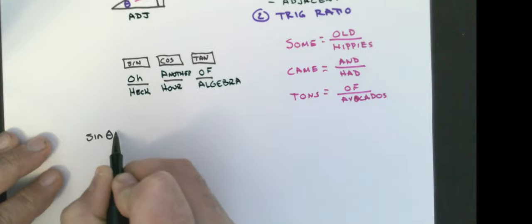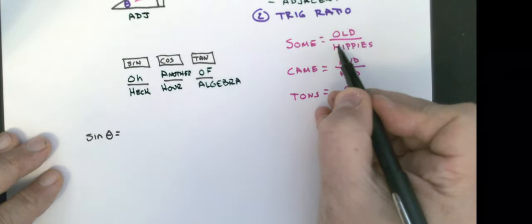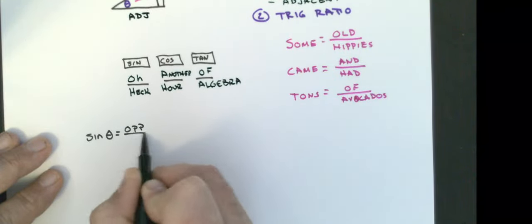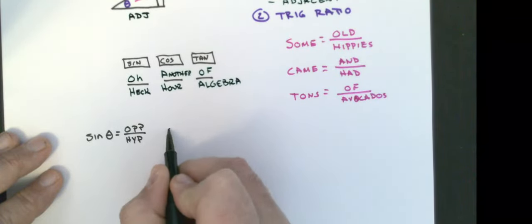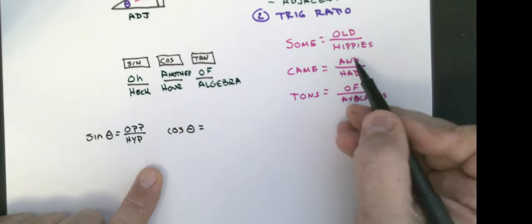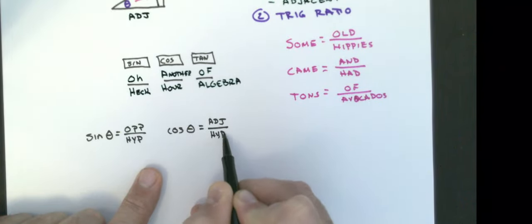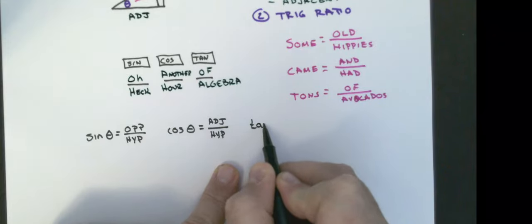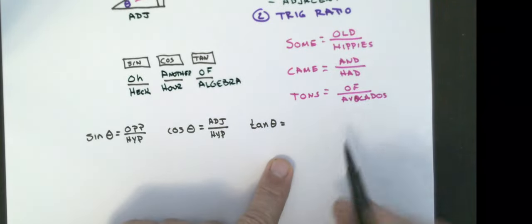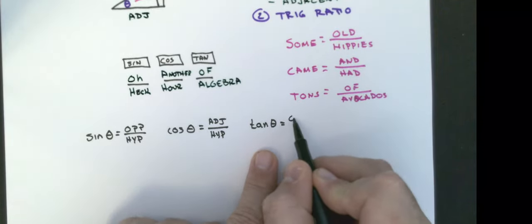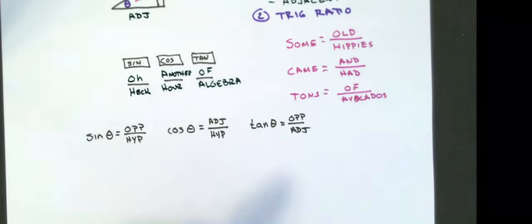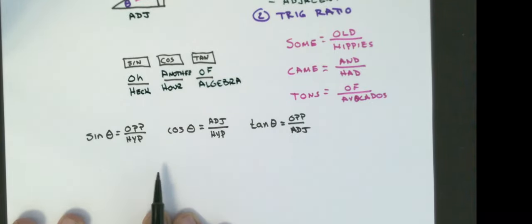The sine of an angle is equal to opposite over hypotenuse. The cosine of an angle is equal to adjacent over hypotenuse. The tangent of an angle is equal to opposite over adjacent. We'll use these ratios once we have a properly labeled triangle in order to solve problems.